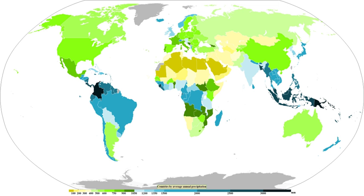The dew point is the temperature to which a parcel must be cooled in order to become saturated and condense to water. Water vapor normally begins to condense on condensation nuclei such as dust, ice, and salt in order to form clouds. An elevated portion of a frontal zone forces broad areas of lift, which form cloud decks such as altostratus or cirrostratus. Stratus is a stable cloud deck which tends to form when a cool, stable air mass is trapped underneath a warm air mass.